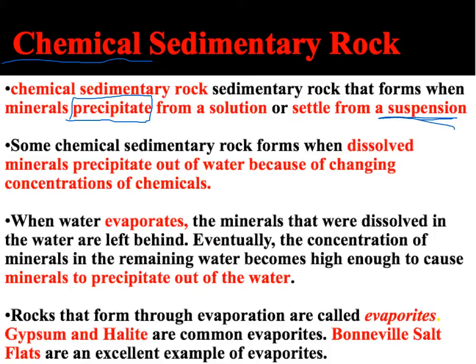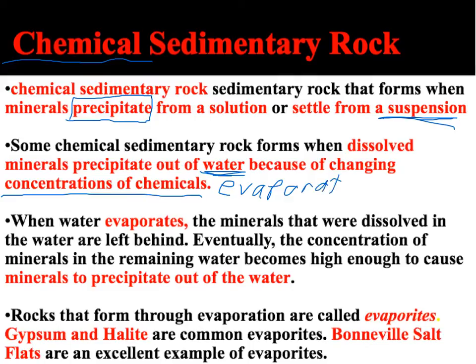The chemical sedimentary rocks that form when minerals precipitate out do so because the water they are in changes the concentration of the chemicals, or something happens to the water, like evaporation. If you boil a pot of salt water, as the water evaporates, the salt gets left behind. That would be known as an evaporite, which is a type of chemical sedimentary rock.